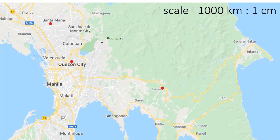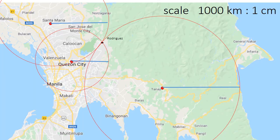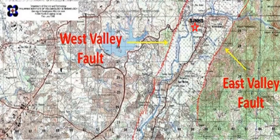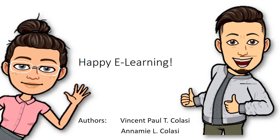In this case, the epicenter is located in Rodriguez, Rizal. Is it possible for an earthquake to have its epicenter in that spot? The answer is yes, because that spot lies exactly on the West Valley Fault. Remember that locating the epicenter of an earthquake allows seismologists to conclude and define the fault system of a location. Thank you very much and happy e-learning!